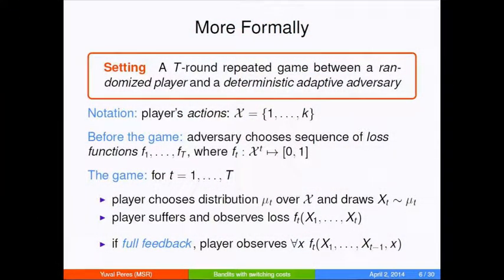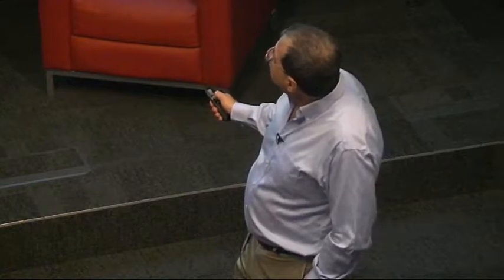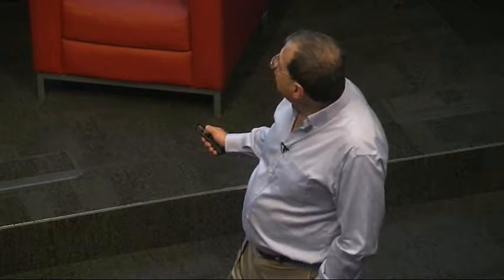The setting will be a T-round game between a player that can randomize and a deterministic but possibly adaptive adversary. The player has one of K actions — think K equals two for most of the discussion. Before the game, the adversary chooses a sequence of loss functions. In the game, for every time step, the player chooses a distribution over actions and draws one from that, and suffers and observes his own loss, which is the function of his actions.